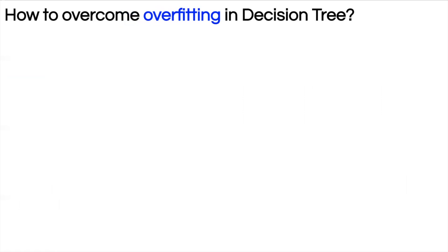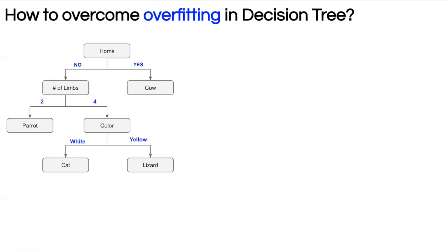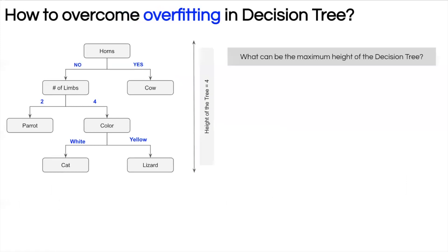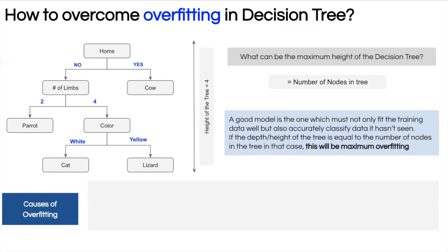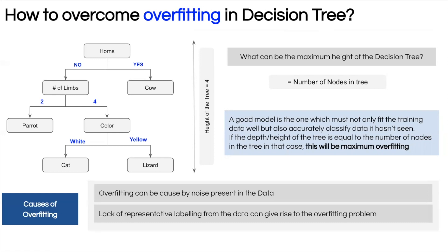Now we'll see how to overcome overfitting in decision trees. Overfitting and underfitting are closely tied to the height of the tree — a tree that is too tall causes overfitting, while a shallow tree causes underfitting. The causes of overfitting in decision trees include noise in the data and lack of representative labeling in the data. These are the two primary sources of overfitting.